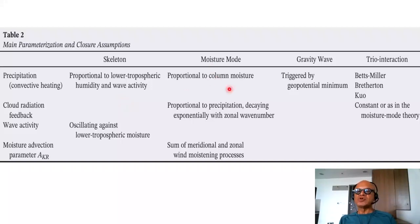Here it's proportional to column moisture. It's triggered by geopotential minimum. And in the trio interaction, there are convective parametrizations like Betts-Miller, Bretherton, and Kuo. Obviously, these are not first principles. There are parametrizations and assumptions, which obviously affect the details, and that is related to what the models consider the main feature to be simulated. Wave activity oscillating against lower tropospheric moisture in the skeleton model requires multi-scale interactions. Moisture advection parameter is assumed in the moisture mode where some of meridional and zonal wind moistening processes are captured.